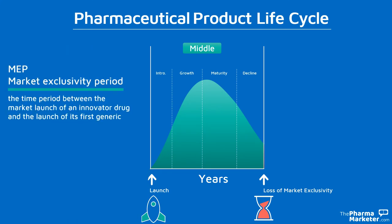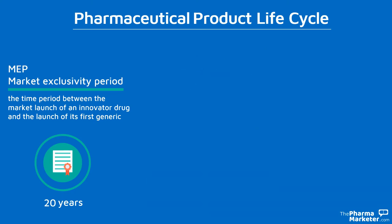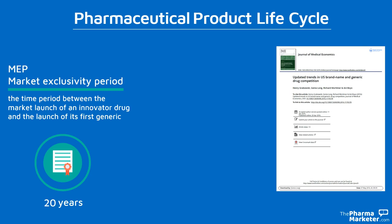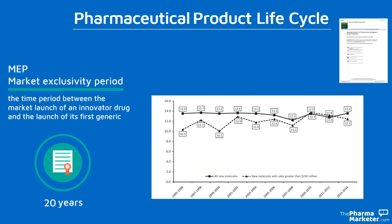Market exclusivity period is the time period between the market launch of an innovator drug and the launch of its first generic. The company files for a patent soon after the discovery of the drug, and from that point has a 20-year patent for the product. The R&D phase takes several years, so by the time the product is approved and available on the market, the patent can be close to running out. A 2016 study by Duke University economist Henry Grabowski calculated the average market exclusivity period of new drugs to be 13.5 years.